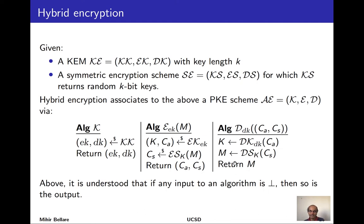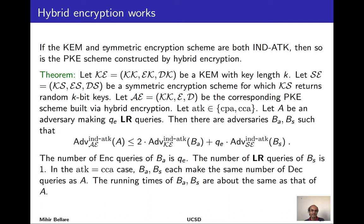One thing to beware of: decryption steps may fail. The KEM decryption could return ⊥, and similarly the symmetric decryption. We adopt the convention that whenever something is ⊥ and appears as input to an algorithm, the algorithm's output is automatically ⊥. So if k is ⊥ then m will automatically be ⊥.